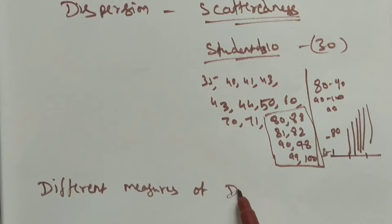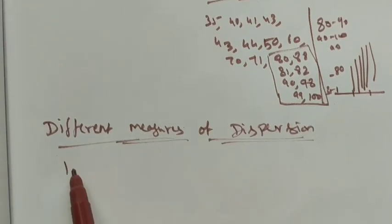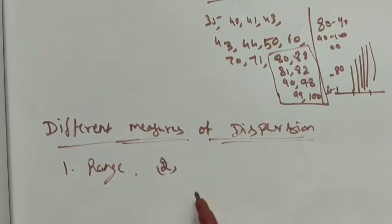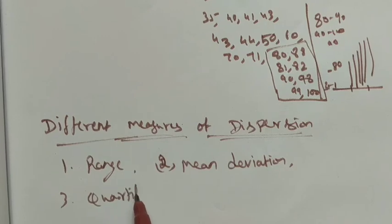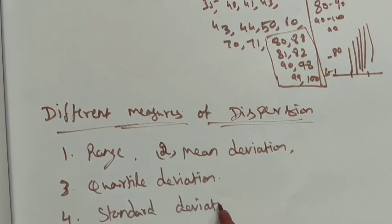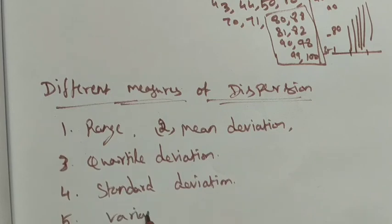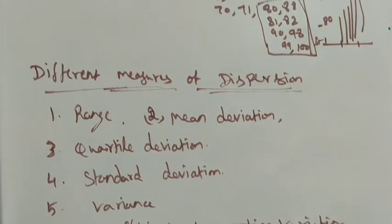We have different measures of dispersion. The first one is range, the second is mean deviation, the third is quartile deviation, the fourth is standard deviation, the fifth is variance, and the sixth is coefficient of variation. We use these to find the scattered value of the data.